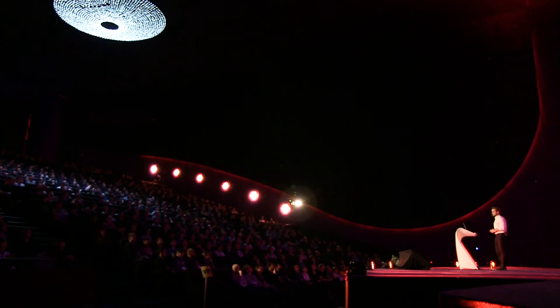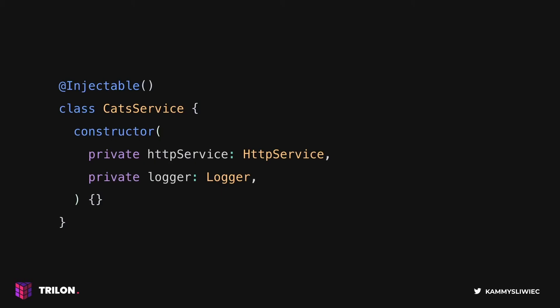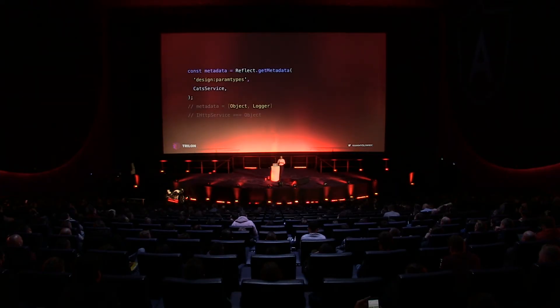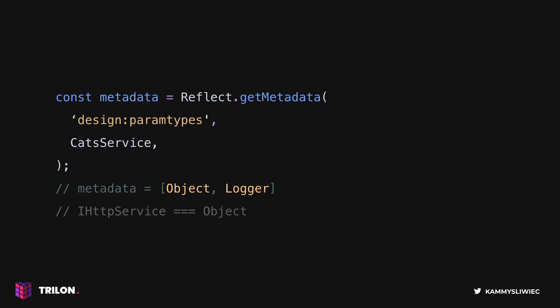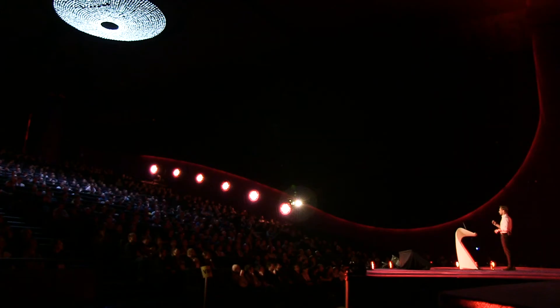It would be too good if everything was this simple — of course, it's not. There are problems you may face often. First, let's talk about interfaces. In our previous example, if we use IHTTPService to clearly indicate we're interacting with an interface instead of a class, and we reflect our constructor metadata again, we get a plain object type instead of useful metadata about IHTTPService. Interfaces do not exist in vanilla JavaScript, so TypeScript cannot provide useful information about IHTTPService — you cannot use interfaces in either Angular or NestJS for dependency injection purposes.